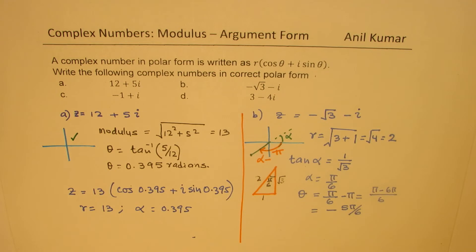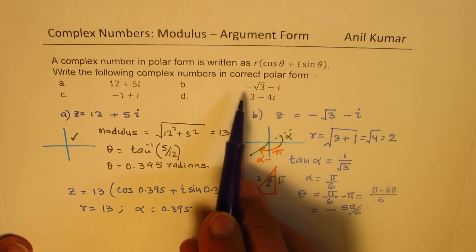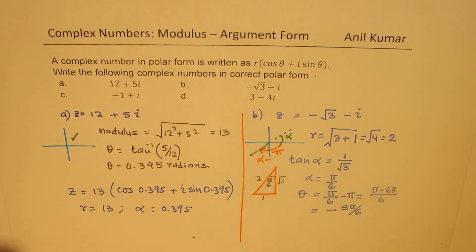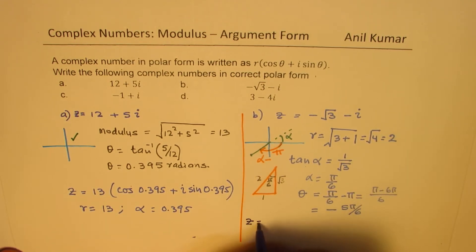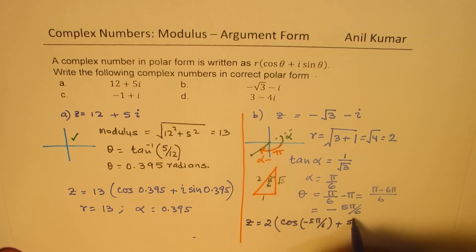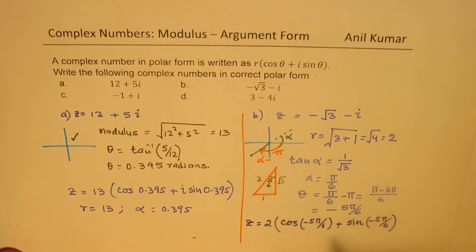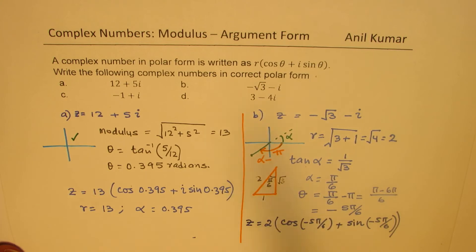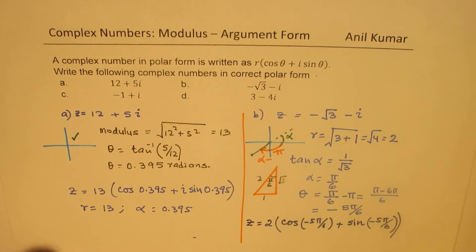So the polar form for −√3 − i is: z = 2(cos(−5π/6) + i sin(−5π/6)). Remember, r must be positive and the sine coefficient must be positive — the angle itself can be negative.